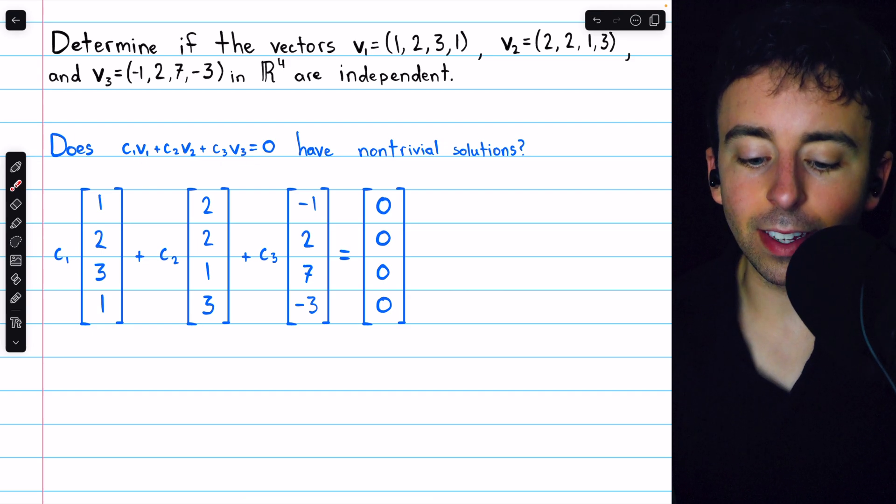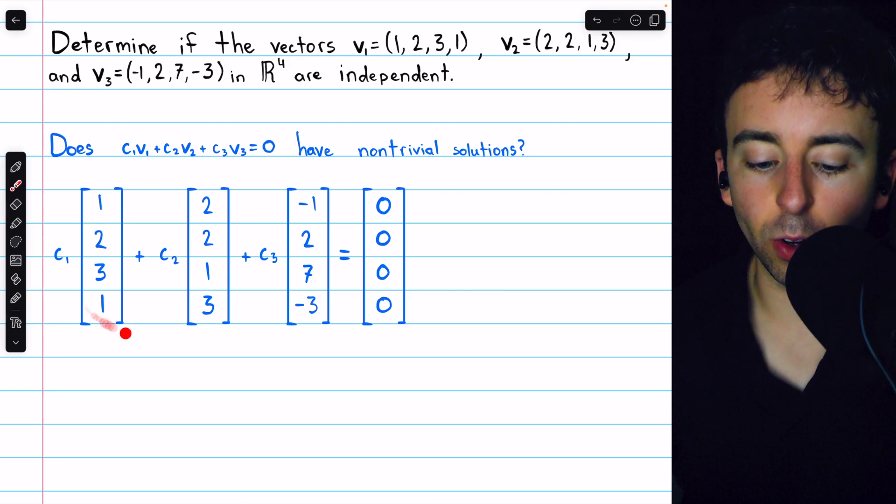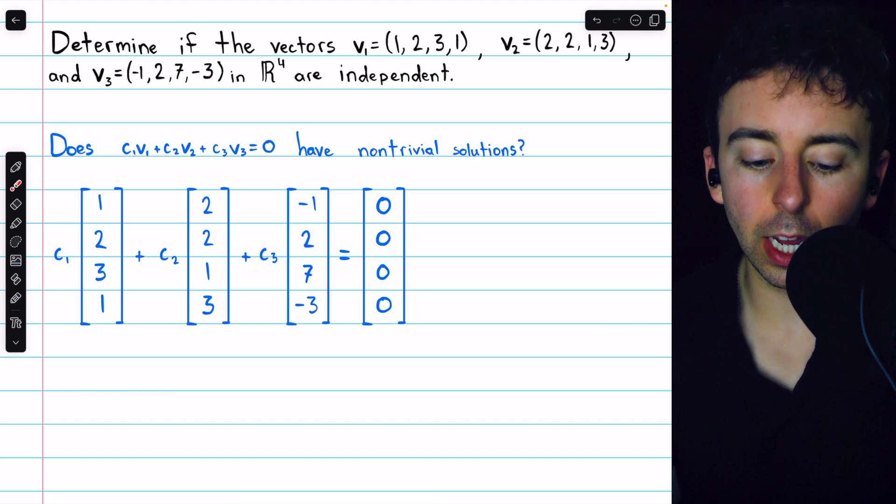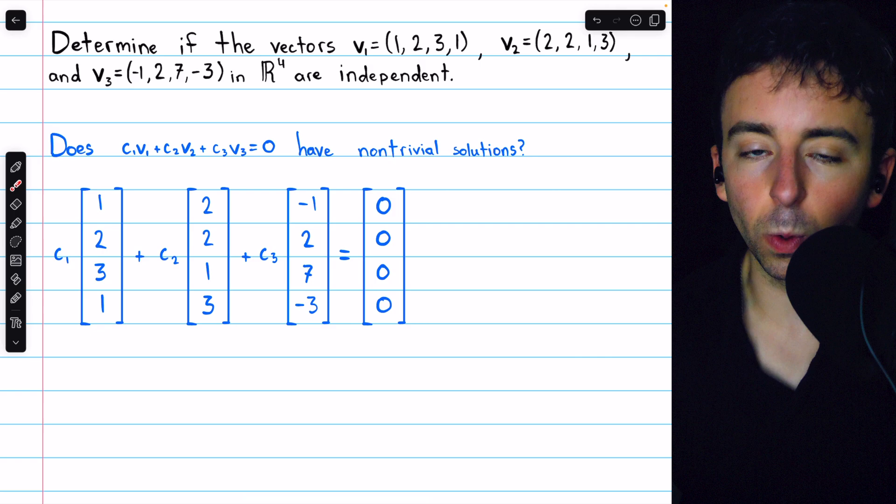Taking this equation and replacing those vectors with what we know they equal, we get this equation. Each vector multiplied by its individual scalar, they're being added together and set equal to zero.